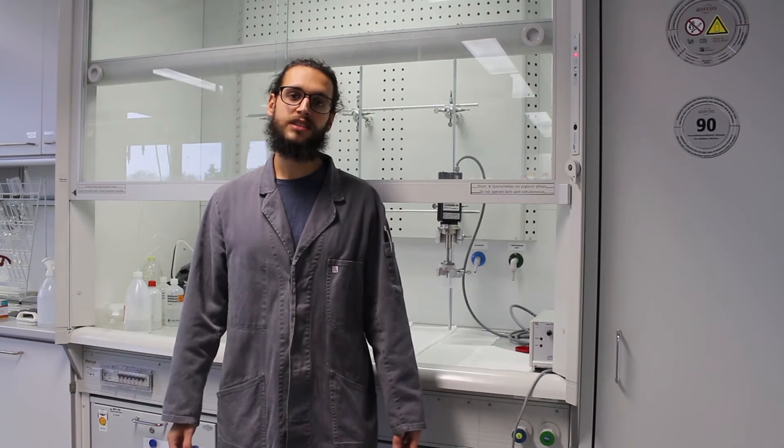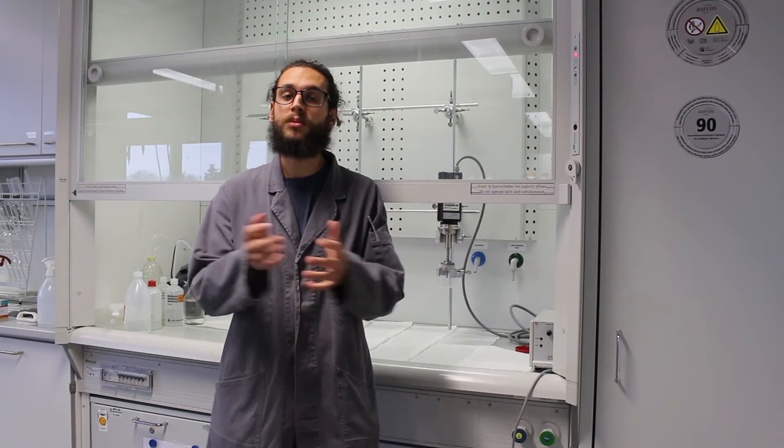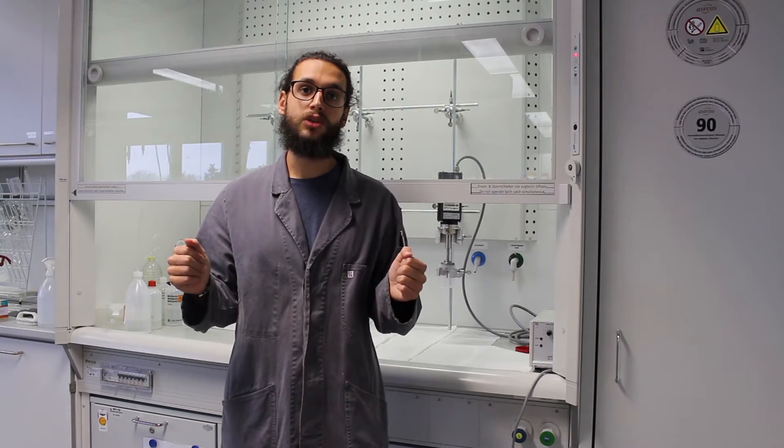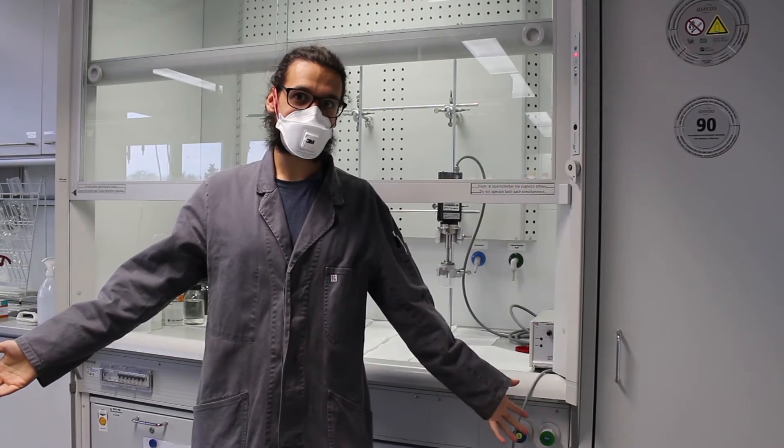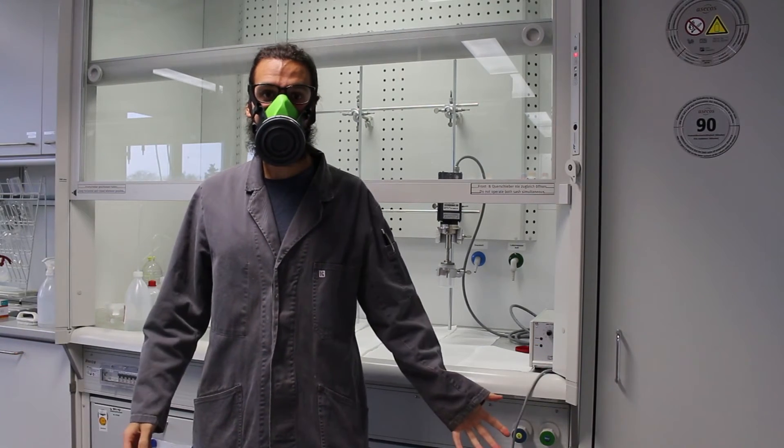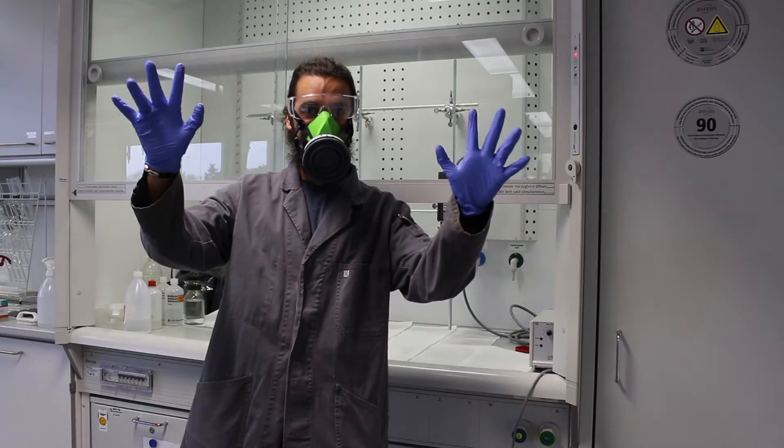So today I'm going to show you a little experiment just for you to understand what it means to be small in practice. And also some really small safety precautions. So if you want to work with nanotubes, you should wear, for example, a mask. Like this one. Or like this one, which is even better. And good glasses too, of course. And gloves.